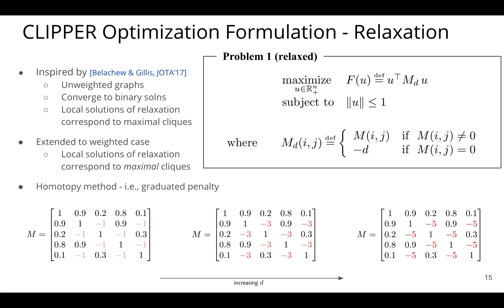And what we do then is, if we look at this relaxation a little bit more, the objective here has this U transpose M_D U, where M_D is encoding that clique constraint from the adjacency or affinity matrix M. So for edges that are not to be chosen, we impose this penalty here, negative D, where D is a positive scalar.